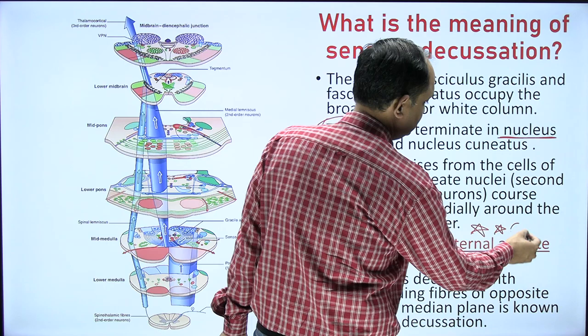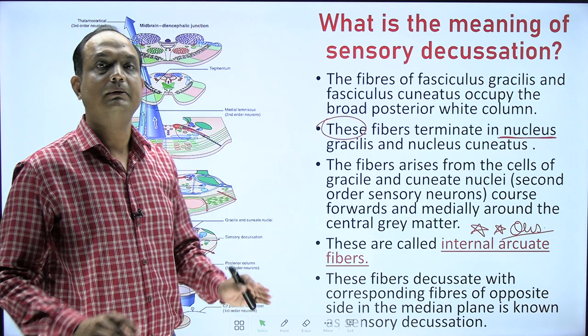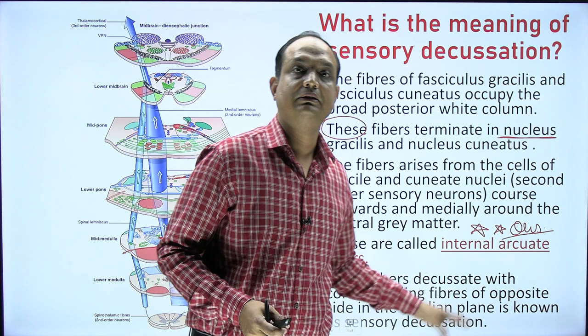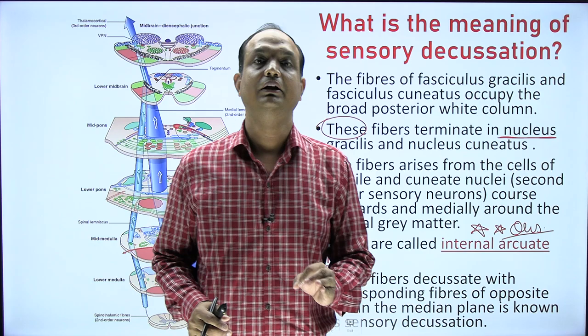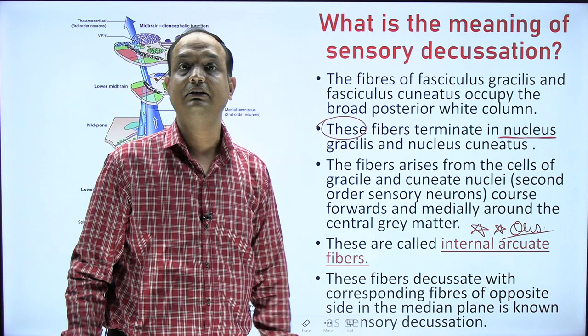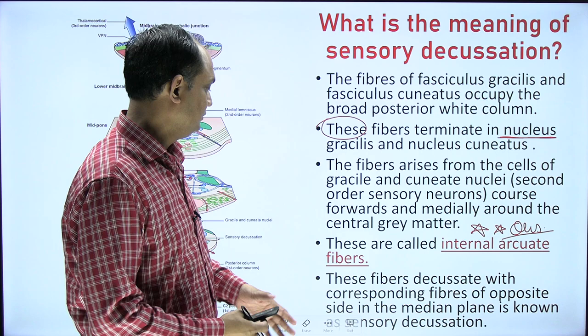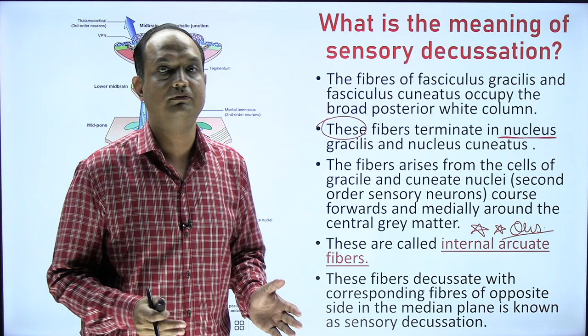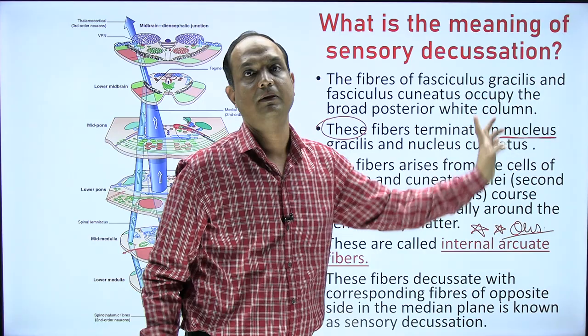The first question from this topic: what do you mean by internal arcuate fibers? In one line: internal arcuate fibers are the second order neurons that arise from the nucleus gracilis and cuneatus in the medulla oblongata. These internal arcuate fibers — the second order neuronal axons — will cross to each other. The crossing of these fibers with the opposite side fibers is known as sensory decussation.